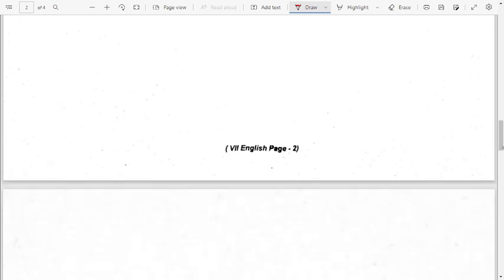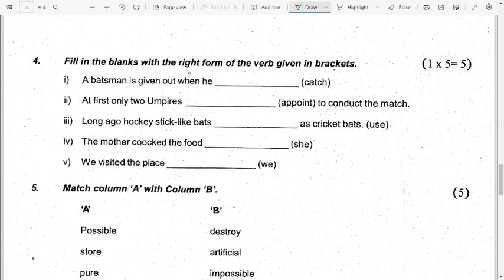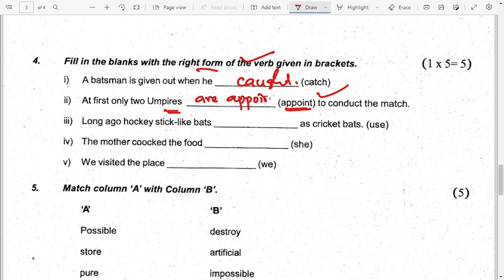The next question is fill in the blanks with the right form of verb given in brackets. A batsman is given out when he is caught. At first, only two umpires are appointed to conduct the match.